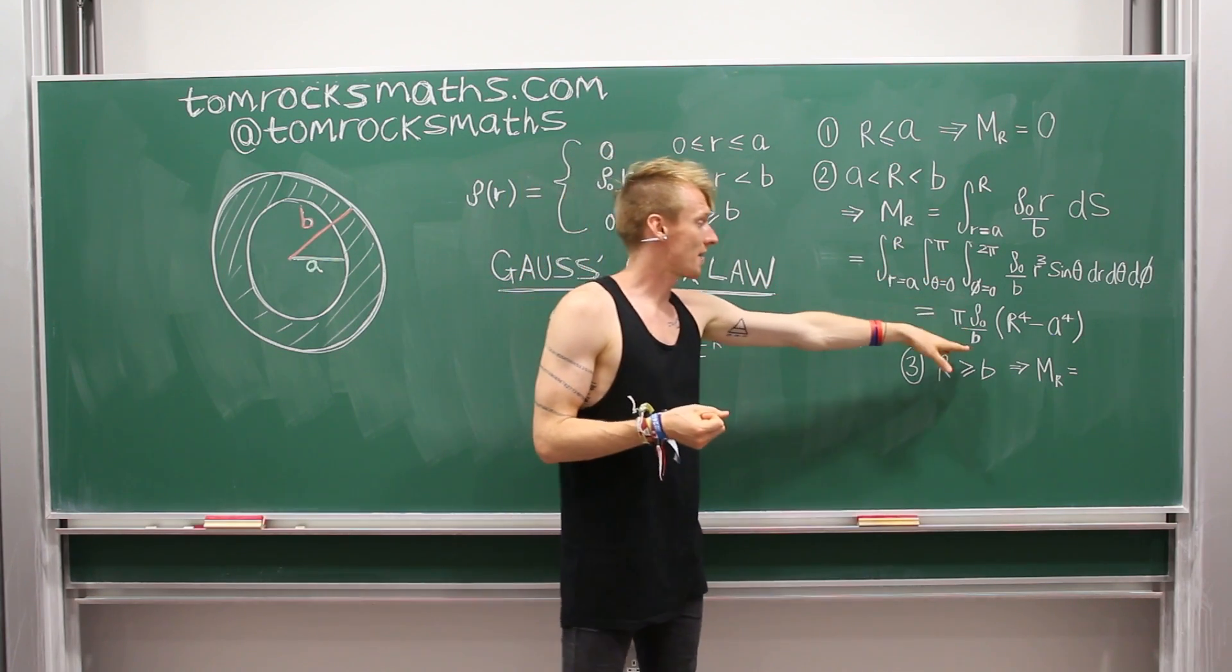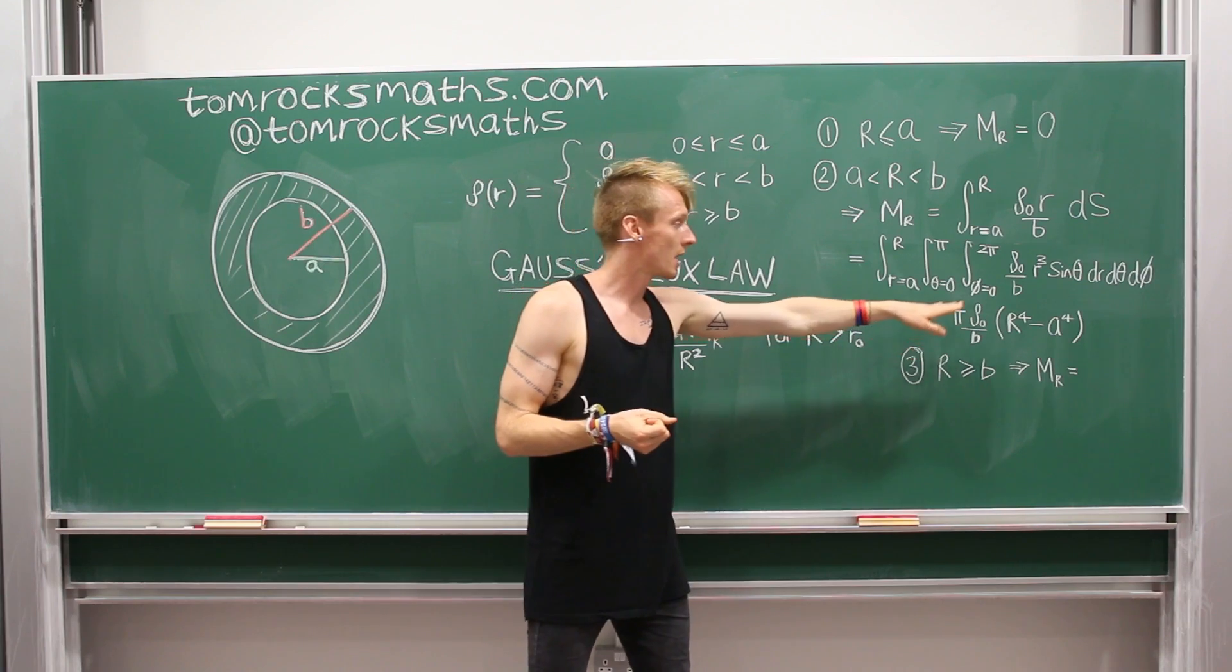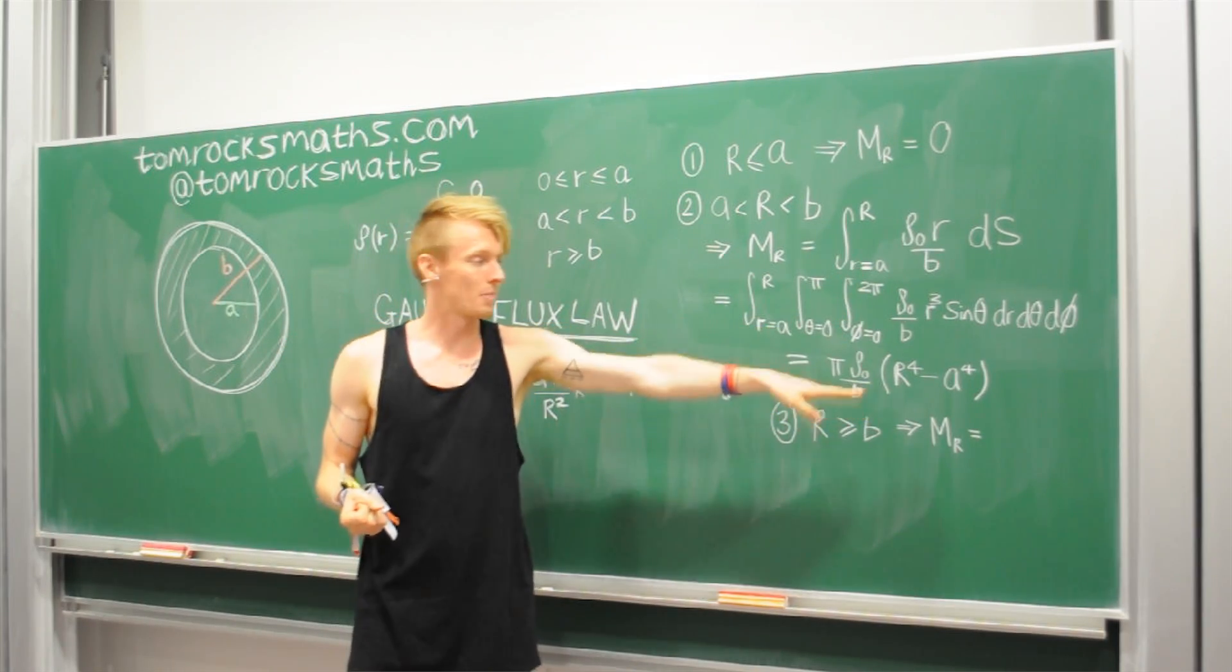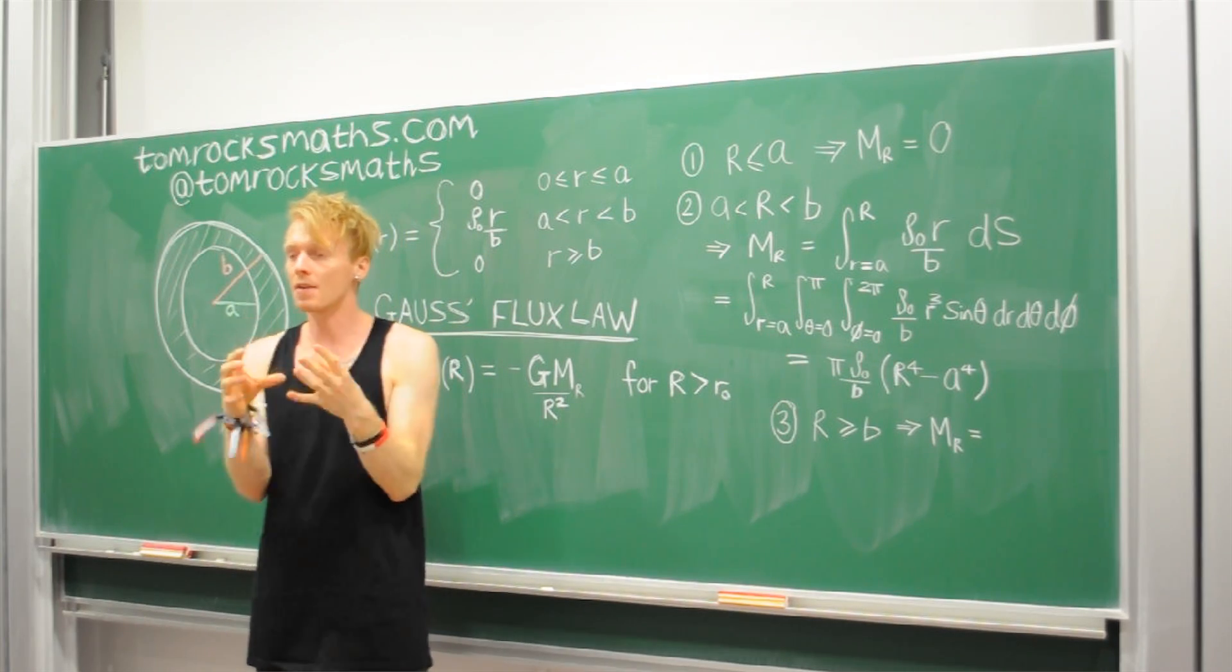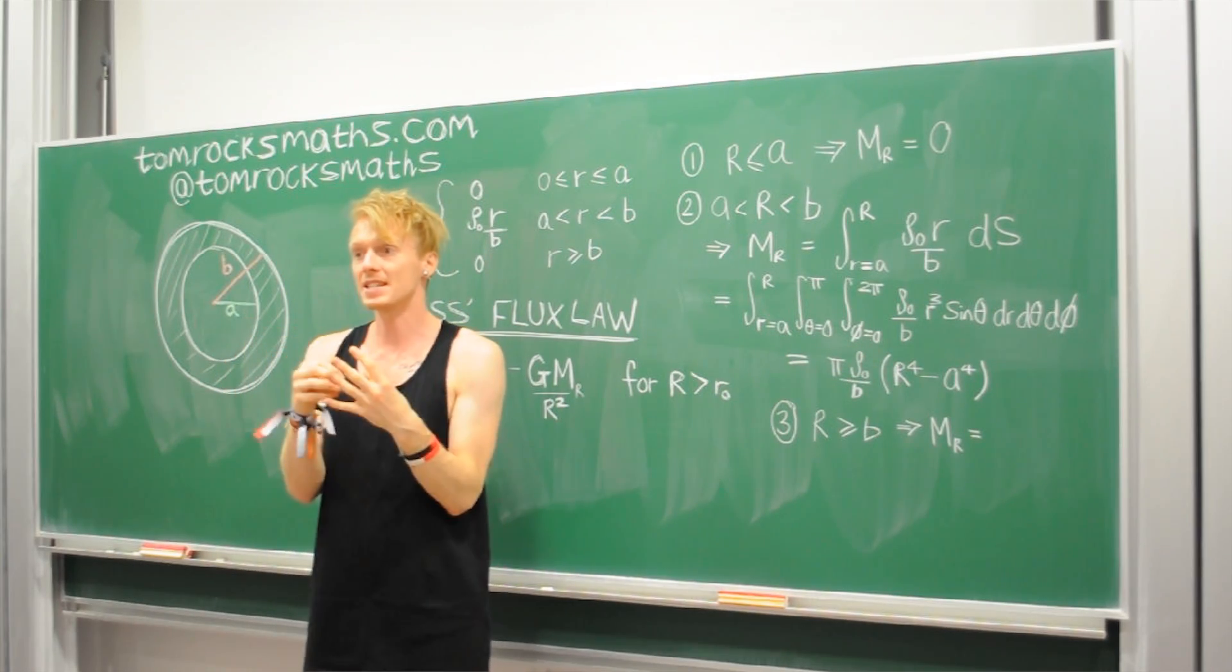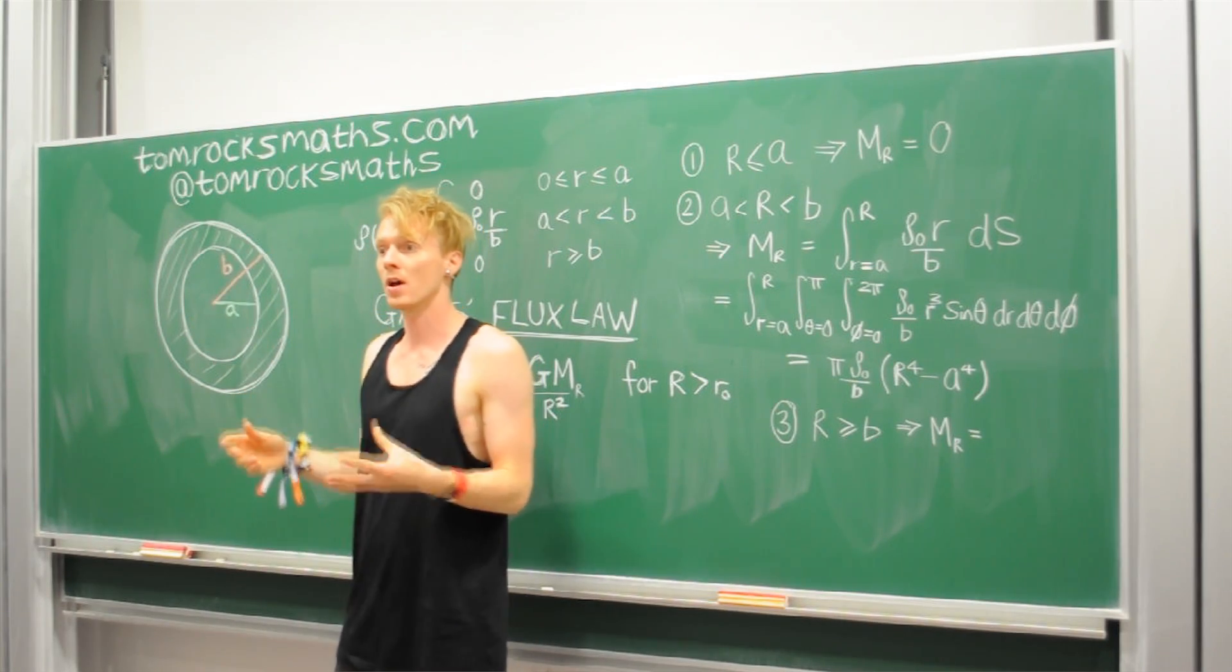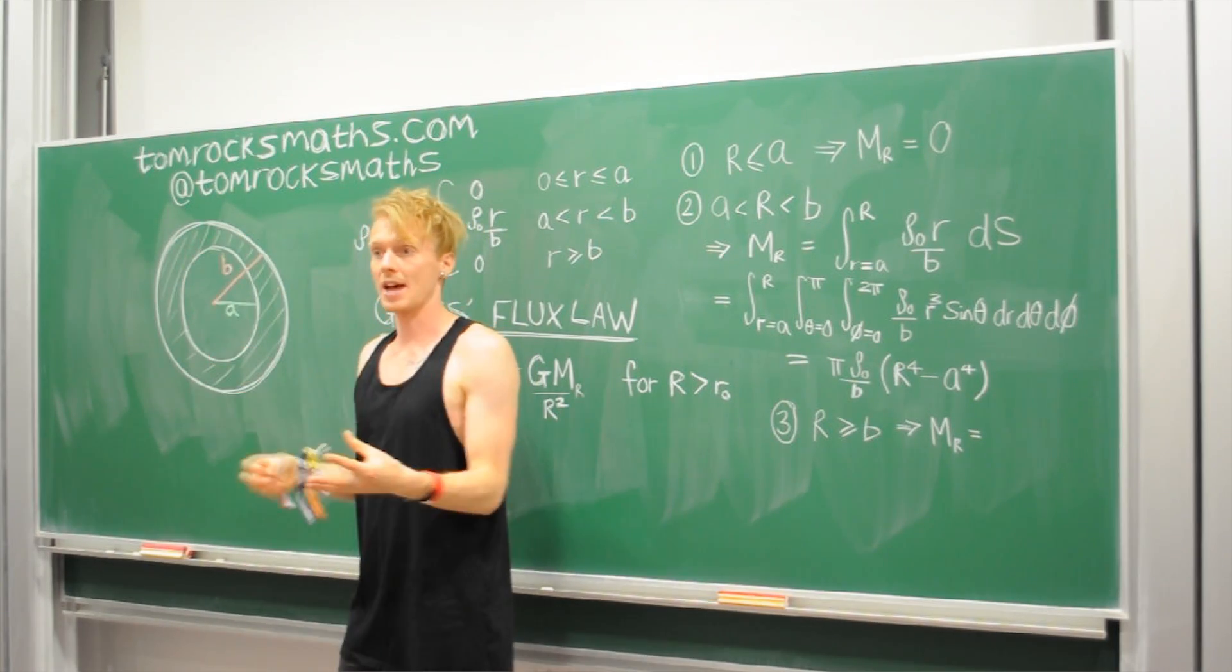But the key point is, you get this answer here, which is pi base density rho-naught, divided by B, times R to the fourth minus A to the fourth. And that is the gravitational field at a distance capital R from the centre of our hollow Earth, where R lies inside the shell.